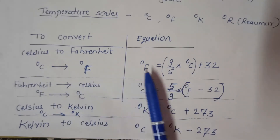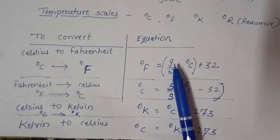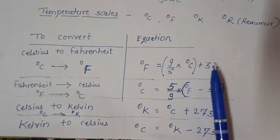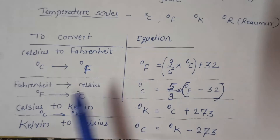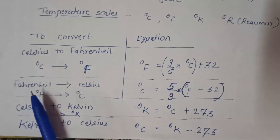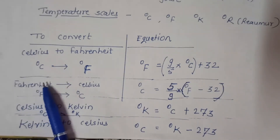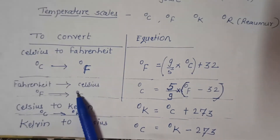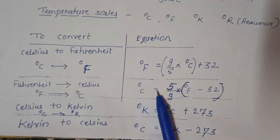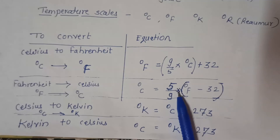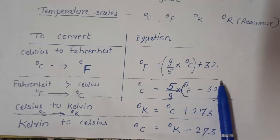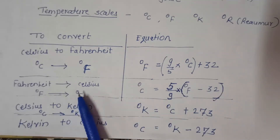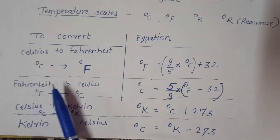We get degree Fahrenheit equal to (9/5 × degree Celsius) + 32. For the reverse conversion, if we are given temperature in degree Fahrenheit and have to convert it into degree Celsius, we use the relation: degree Celsius is equal to 5 upon 9 into (degree Fahrenheit minus 32). This is the conversion from degree Fahrenheit into degree Celsius.